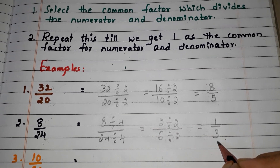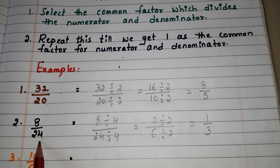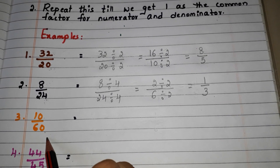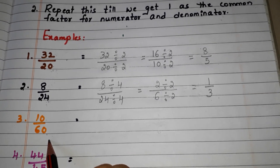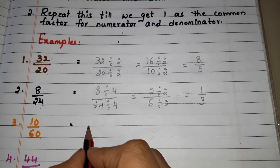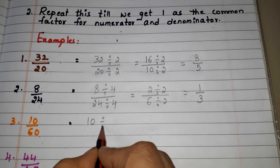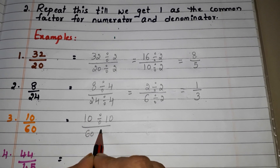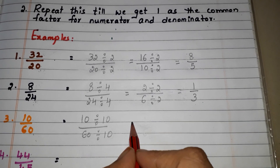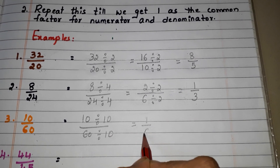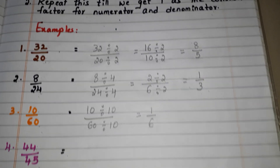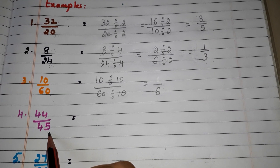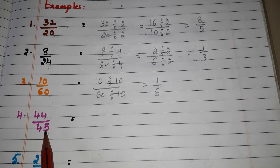So 1 by 3 is the lowest form of the fraction 8 by 24. Let us go to another example: 10 by 60. Here we can select the factor 10, because 10 divides 10 as well as 10 divides 60. So the answer is 1 by 6.